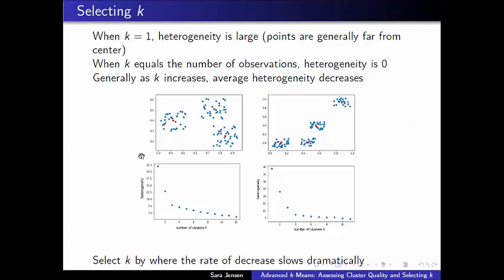I've shown some examples here — one dataset we've done already, where we created data with three clusters, and another where there ought to be four visible clusters. Both datasets were fabricated to have three and four cluster centers respectively. I ran about 20 iterations of k-means, measured the lowest heterogeneity out of those 20 iterations, and graphed those values. For both examples, we see the expected trend: heterogeneity starts high when k equals 1, decreases as k gets larger, decreasing quickly at first and then flattening out.